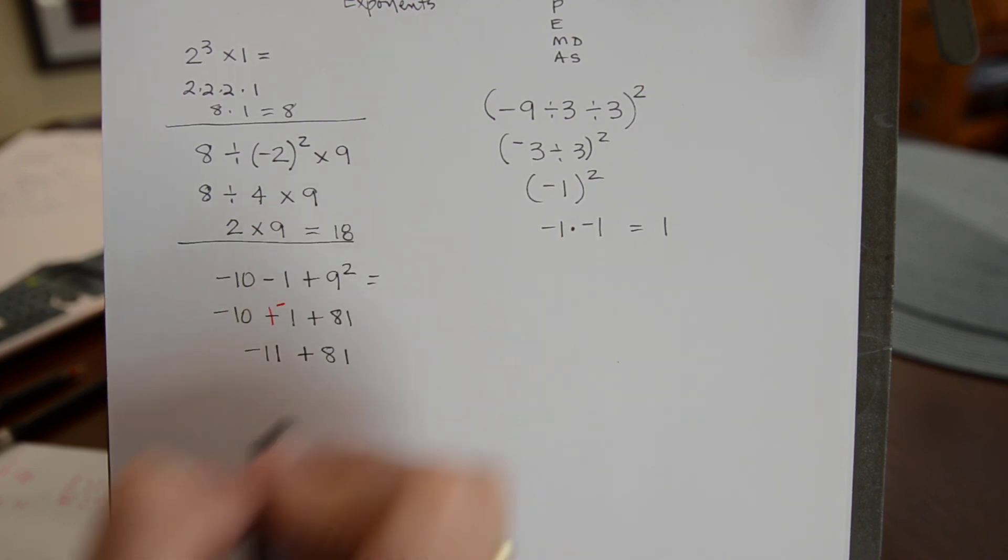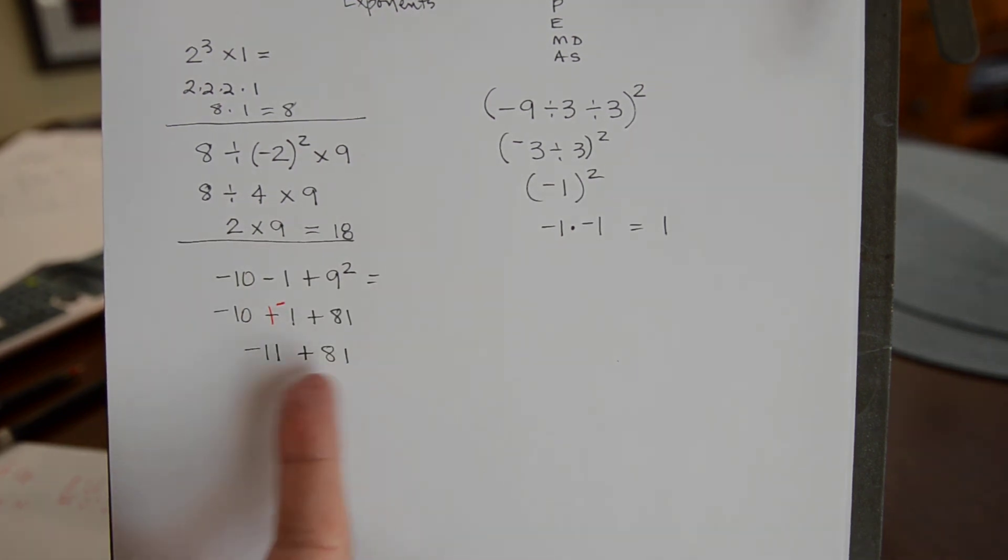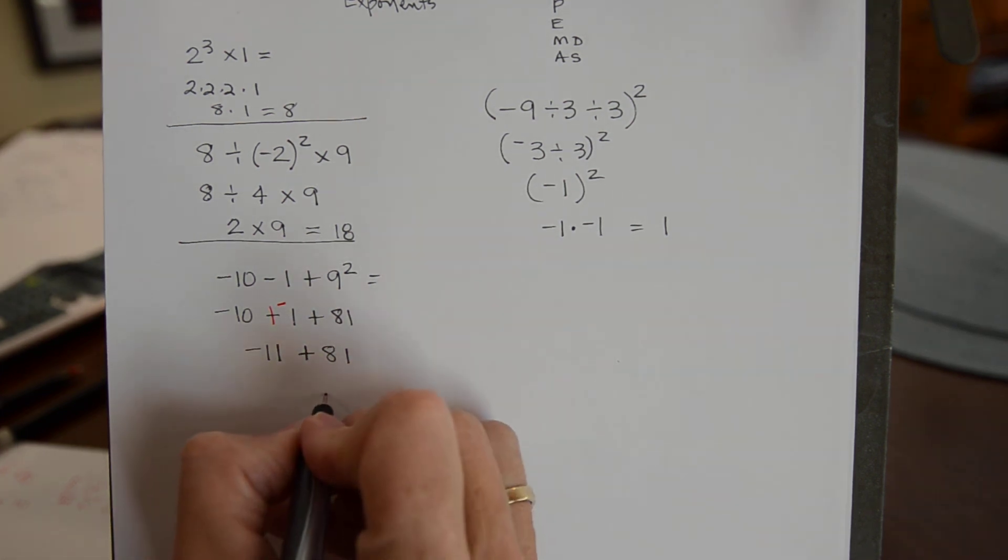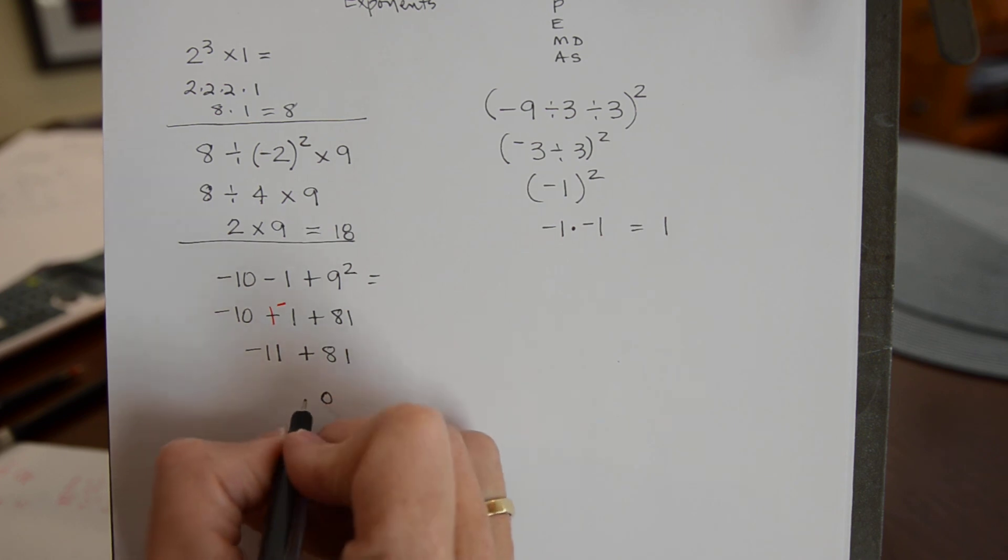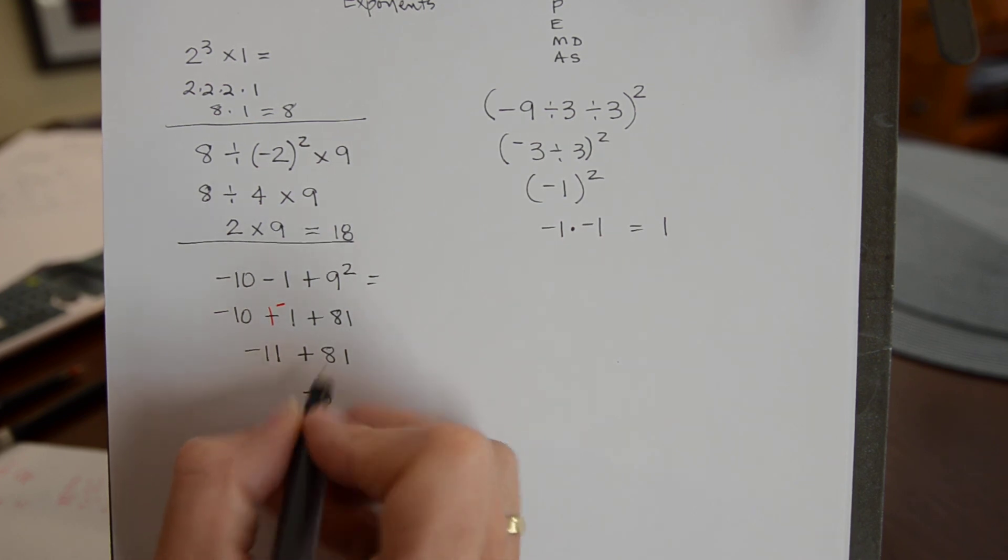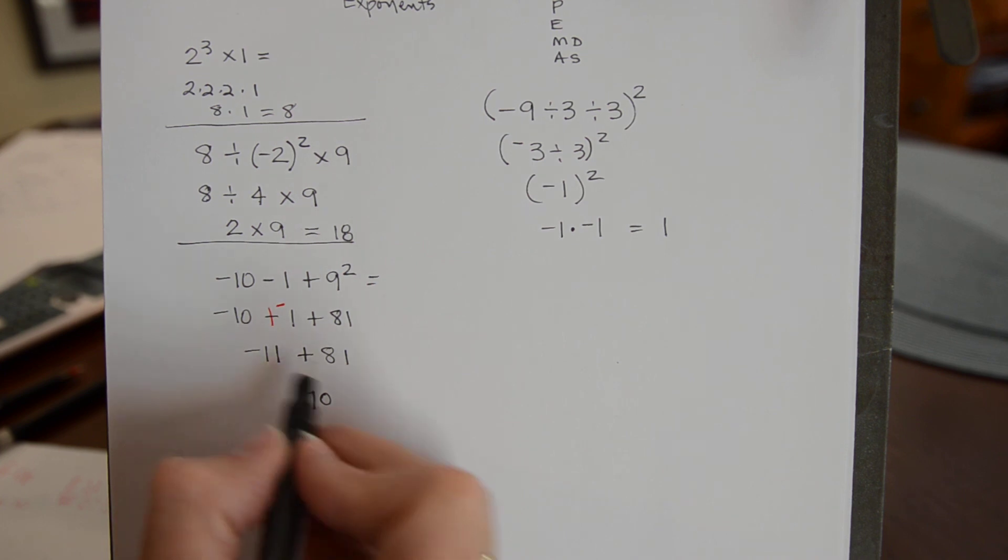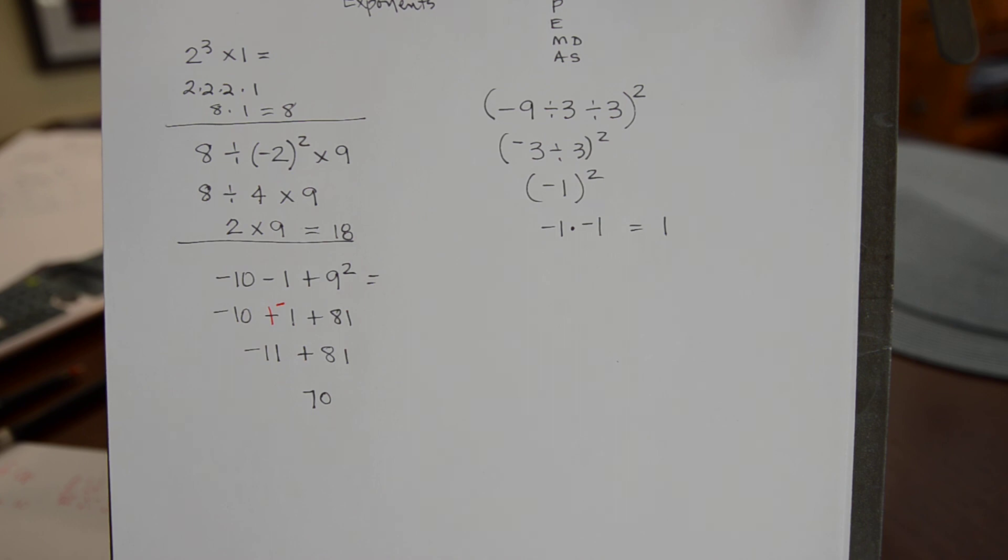And the 1 minus the 1 is 0. And then the 8 minus the 1 is 7. And because the 81 is larger than the negative 11, you're going to leave it as a positive number. So there's the answer to that.